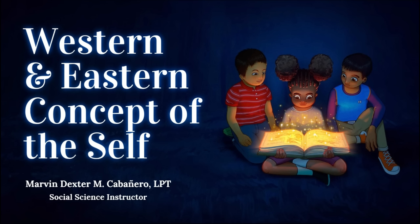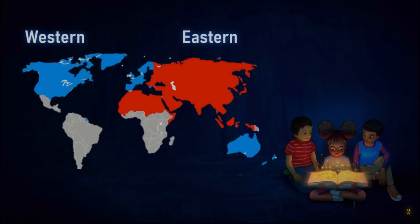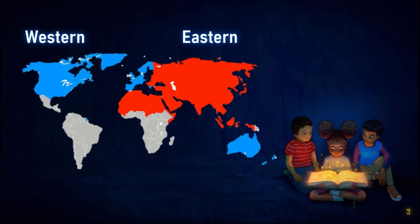Hello students, welcome to Understanding the Self. In today's video lecture we are going to discuss Lesson 4 of Chapter 2, focusing on the western and eastern perspective of the self. When we compare our country to other countries, we have different cultures and different environments, which creates different perceptions of the self. One of the most prominent distinctions between cultures is the eastern versus western dichotomy — dichotomy meaning two.